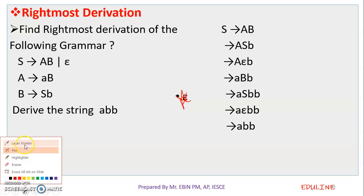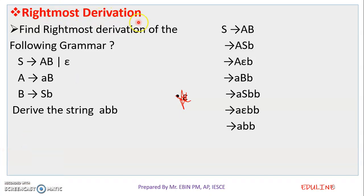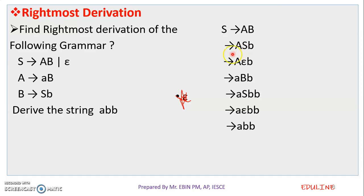Then, we will use the rightmost derivation. Find the rightmost derivation of the following grammar. We will use the rightmost derivation. If we test this against the rightmost derivation, the rightmost derivation will change in the traditional arrow. We have a right here and left here. Then we replace S, we will replace S, Epsilon.